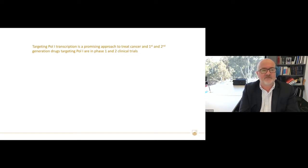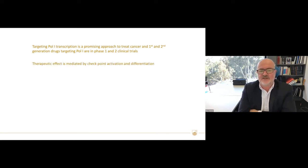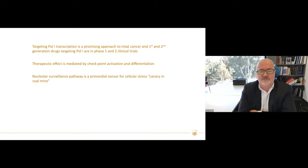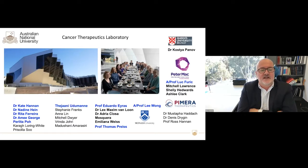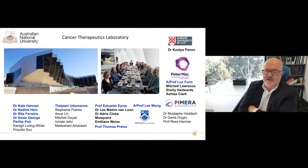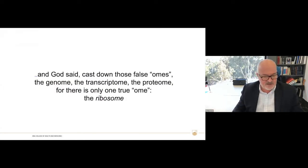In summary, targeting POL1 transcription is a promising approach to treat cancer. First-generation drugs are in phase one and phase two clinical trials in Australia and overseas. The therapy effect is mediated by checkpoint activation and also differentiation. This is not a slow response to the loss of ribosomes — it's a rapid activation of these checkpoints. We believe this nucleolar surveillance pathway has been activated as a primordial sensor for cellular stress — something akin to the canary in the coal mine. Almost all cellular stressors that stabilize P53 require this functional nuclear surveillance pathway. Thank you very much.